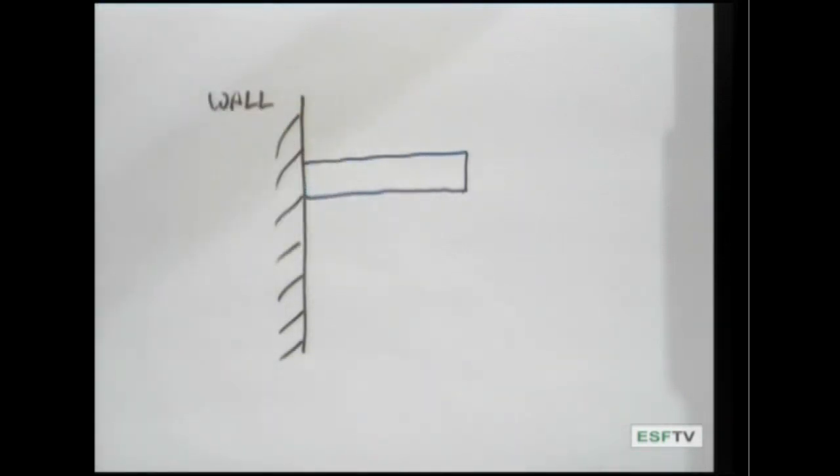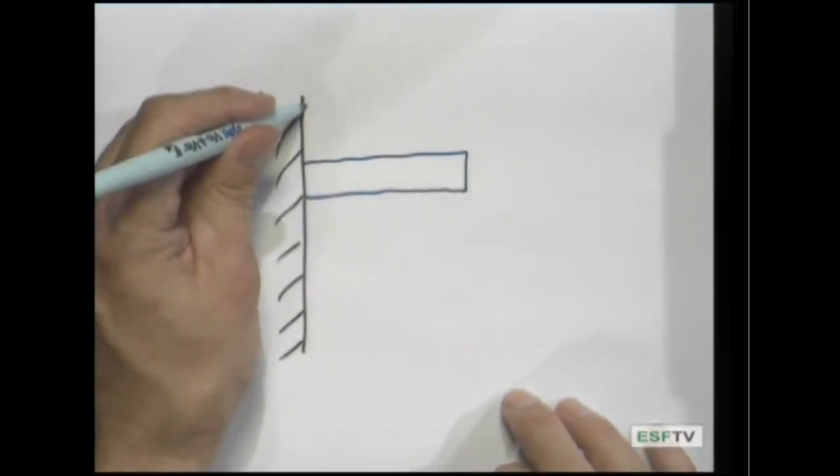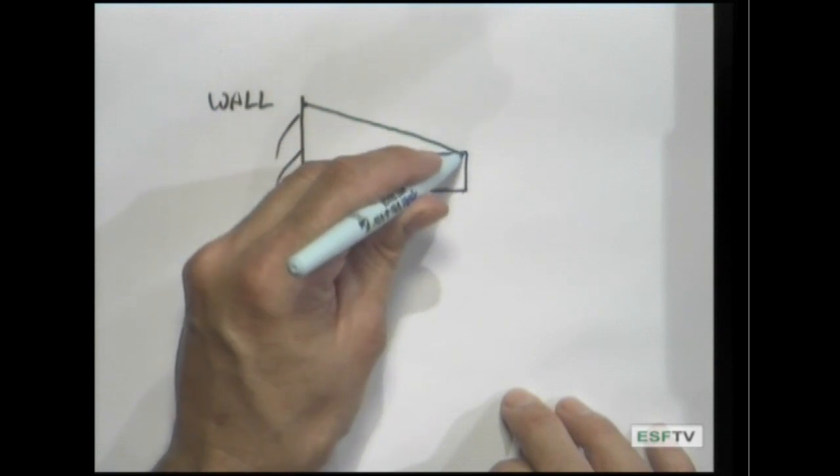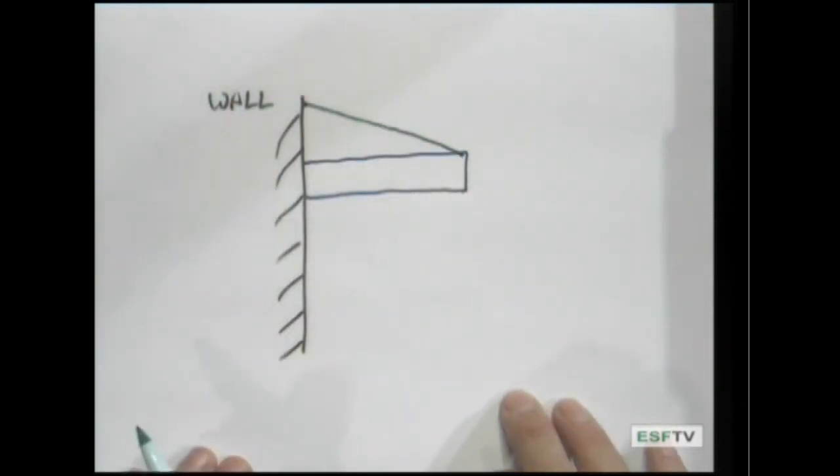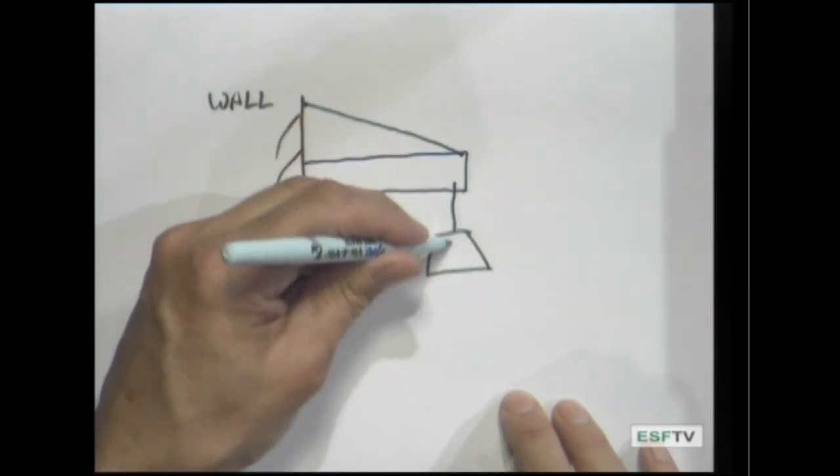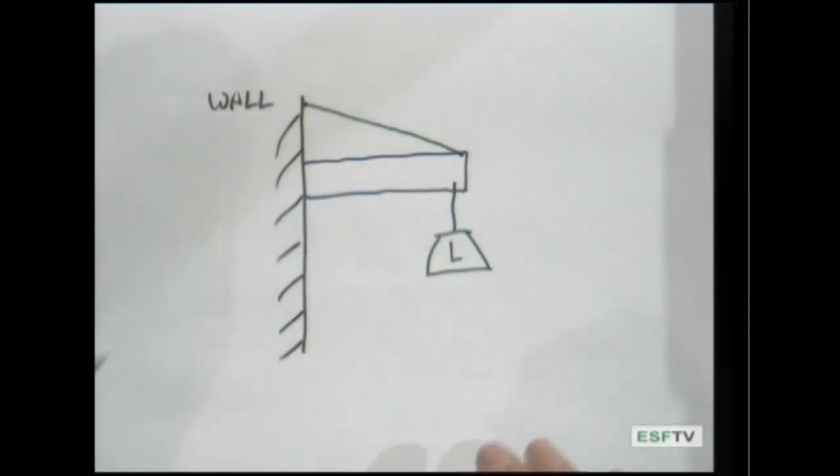And now, instead of relying on tension within the beam to redistribute the load, you can simply hook the beam's end to a cable or something that will help support the load in tension. Now, if you hang a load from this beam, you're doing the same thing that you're doing in the simplest cantilever.